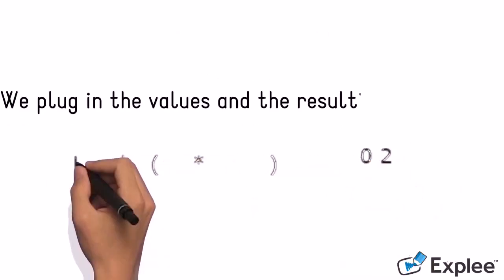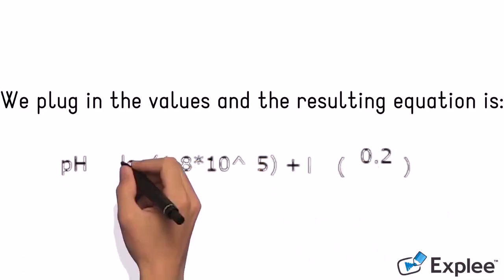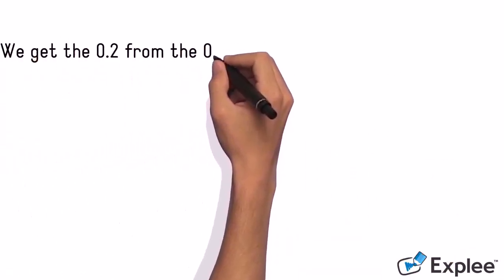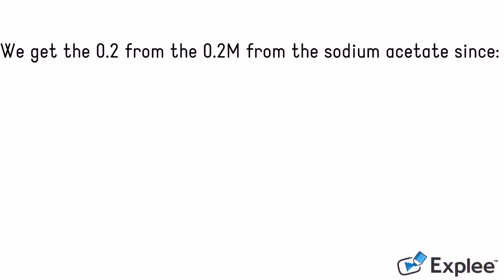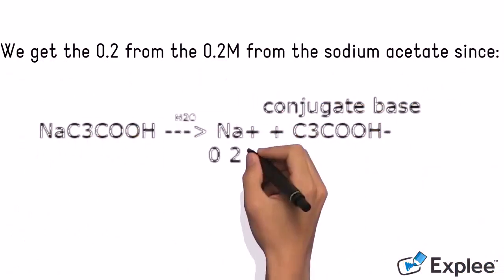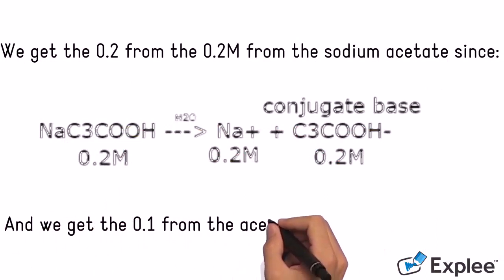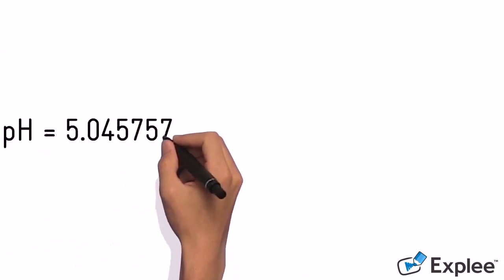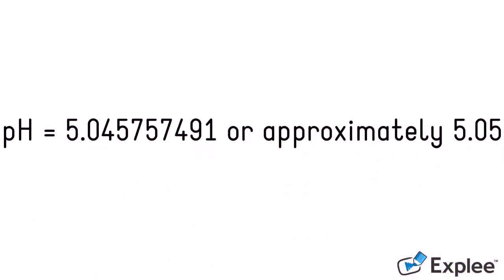We plug in the values and the resulting equation. We get the 0.2 from the 0.2 M from the sodium acetate, and we get the 0.1 from the acetic acid. The resulting pH of the equation is 5.045757491 or approximately 5.05.